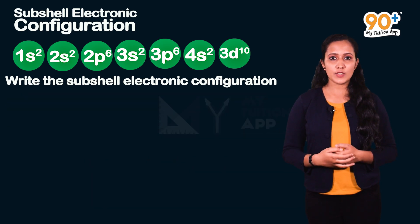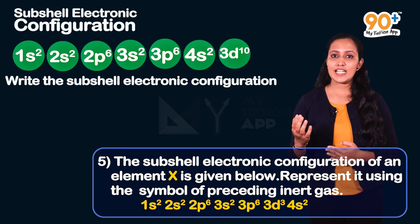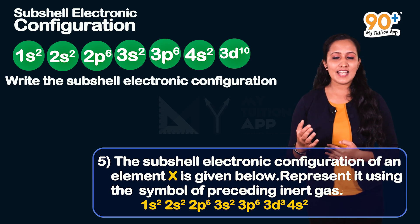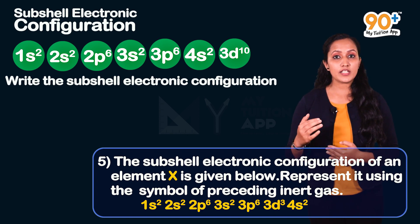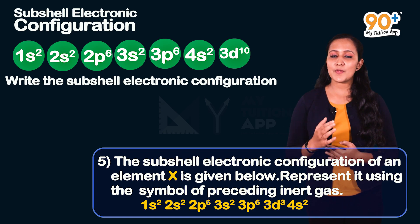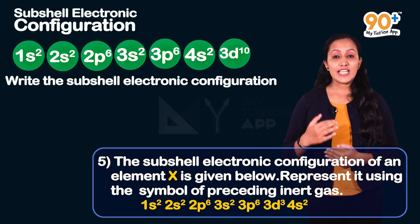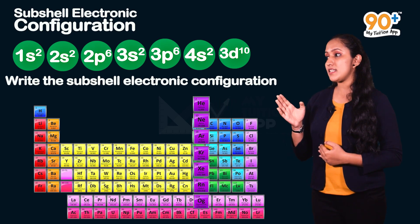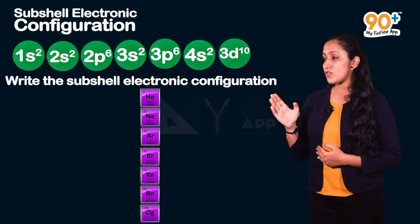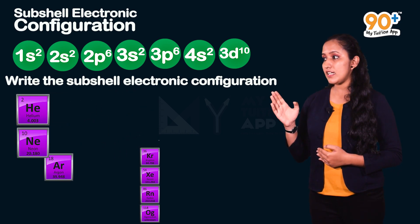Fifth question: The subshell electronic configuration of element X is given. Represent it using the preceding inert gas. The inert gases (Group 18) are helium-2, neon-10, and argon-18, where 2, 10, and 18 are their atomic numbers.